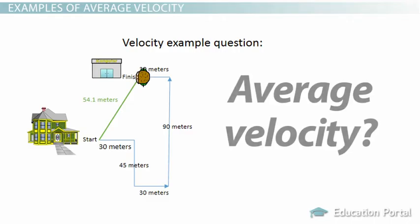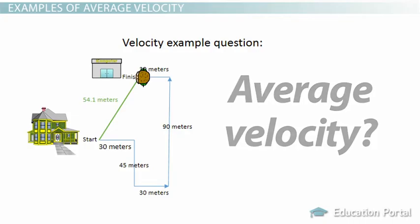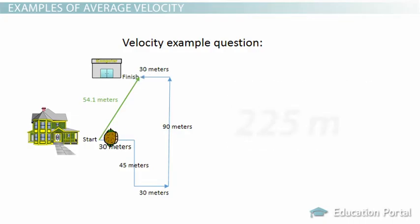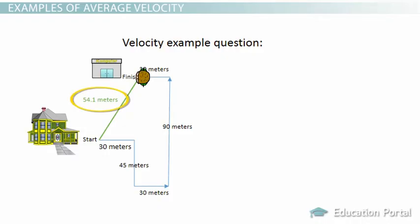Now let's solve for the average velocity. Remember, velocity depends on total displacement, not total distance traveled. In this case, you walked a distance of 225 meters in 2 hours, but your displacement from your starting position, your house, to your final position, the store, is only 54.1 meters northeast, represented by the green line.